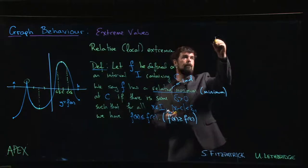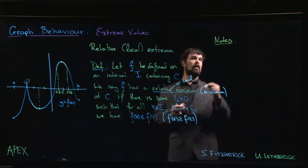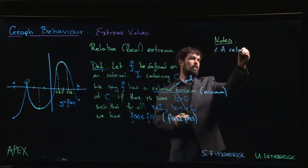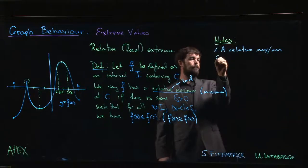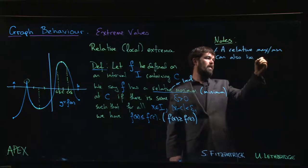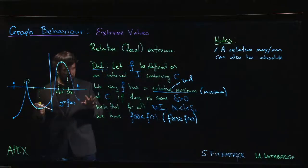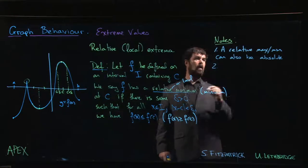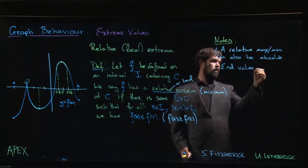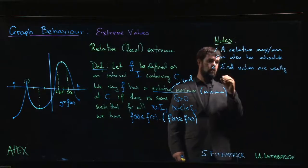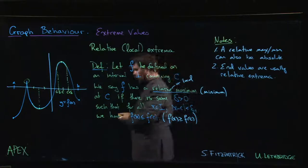So a few things to note. The first one, which you've probably observed as we've played around with this example, is that a relative max/min can also be an absolute max/min. The other thing, and it's not immediately obvious from the definition, but the definition allows for end values.